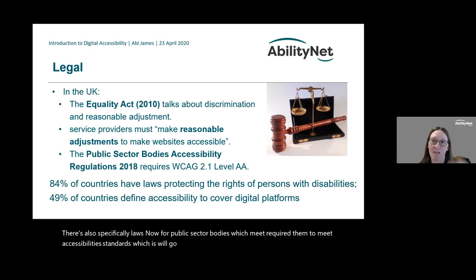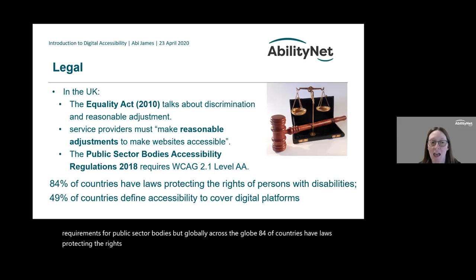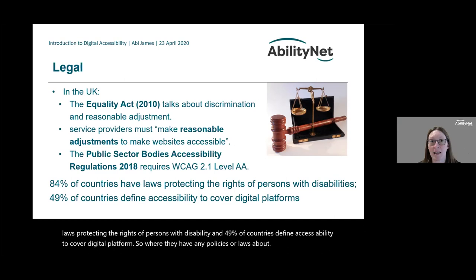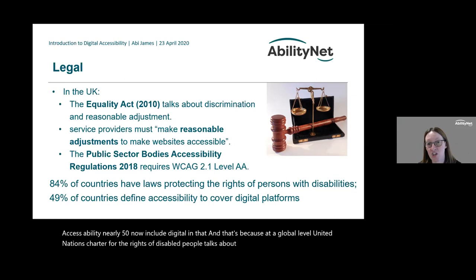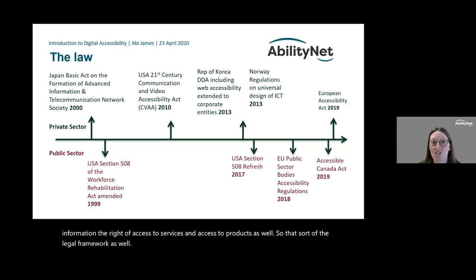There are also specific laws for public sector bodies requiring them to meet accessibility standards. Globally, 84% of countries have laws protecting the rights of persons with disability, and 49% define accessibility to cover digital platforms. At a global level, the UN charter for the rights of disabled people talks about the rights of access to information, services, and products — and many countries now have laws referring to digital accessibility in both the private and public sectors.